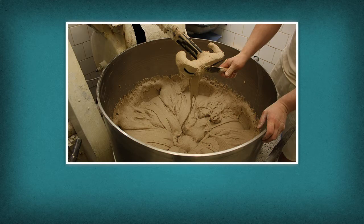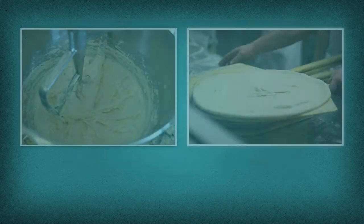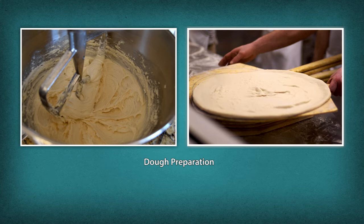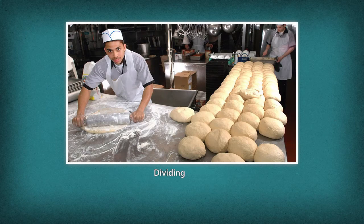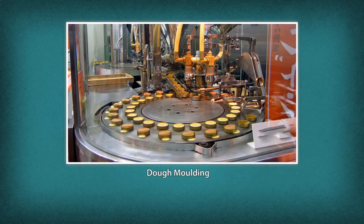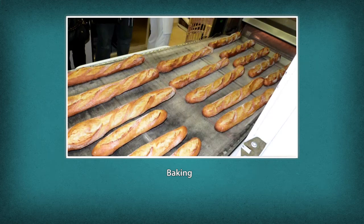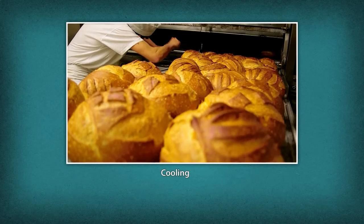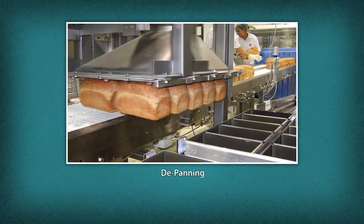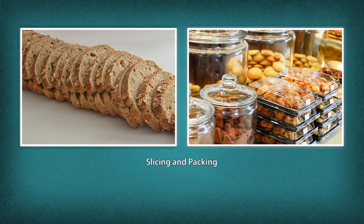Following are the broad steps giving an overview of the entire process of baking: pre-mixing, dough preparation, dividing, dough molding, proofing, fermentation or non-fermentation, baking, cooling, de-panning, slicing and packing.